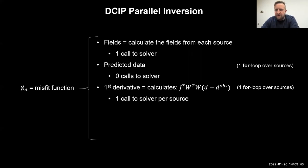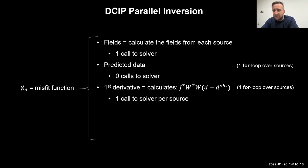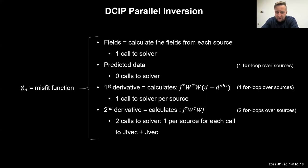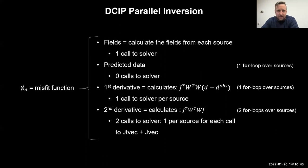Secondly, we need to calculate the first derivative. Simpeg uses the implicit form of calculating the sensitivity matrix transposed times a vector — we're not explicitly forming it. That involves one for-loop to build the result, and every iteration of that loop requires a call to the solver. However, we can store the factorizations from the fields calculation and reuse them. For the second derivatives, Simpeg uses the implicit form to calculate J times vector and J-transpose times vector, so now we have two for-loops, each requiring solver calls. Storing factorizations helps, but it is still time-consuming.